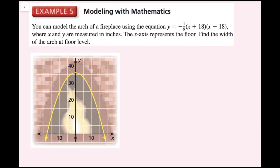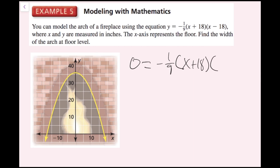For example 5, you can model the arch of a fireplace using the equation y equals negative 1 ninth times the quantity x plus 18 times the quantity x minus 18, where x and y are measured in inches. The x-axis represents the floor. I need to find the width of the arch at floor level — the distance between where the arch meets the floor. Since the floor is the x-axis, I set y equal to zero.